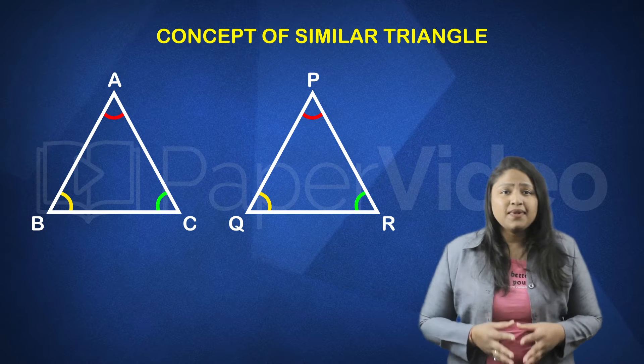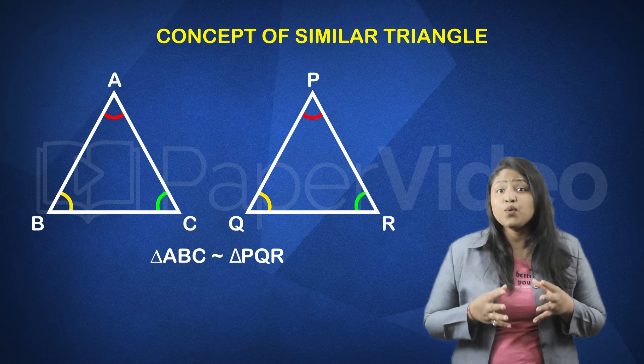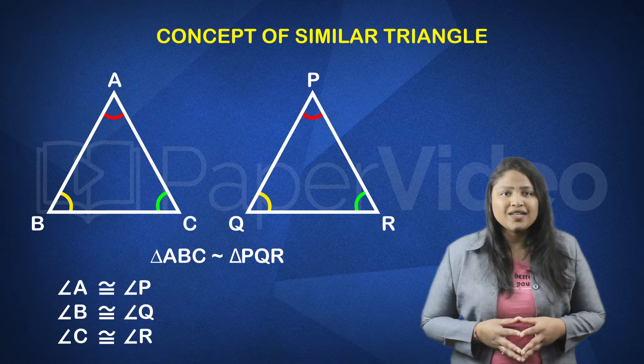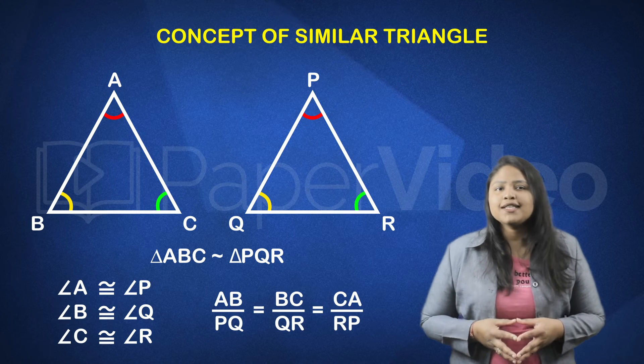That's correct, we can apply the concept of similarity which says two triangles are similar if their corresponding angles are congruent and corresponding sides are proportional.